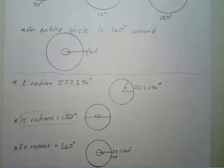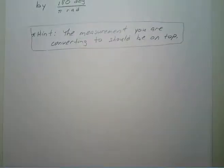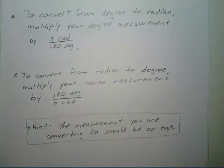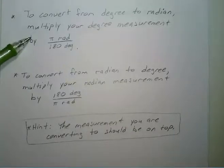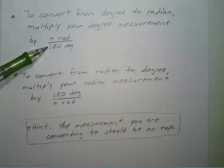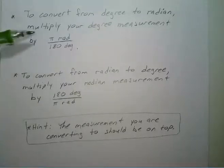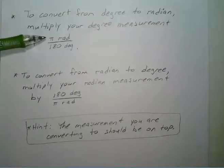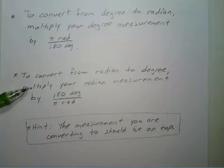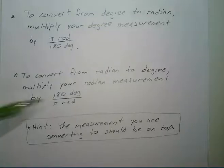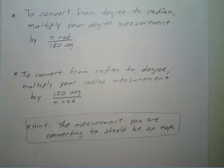Now we'll move on to how to convert from degrees to radians and radians to degrees. If you want to convert from degrees to radians, you multiply your degree measurement by pi radians over 180 degrees. If you're converting from radians to degrees, you multiply your radian measurement by 180 degrees over pi radians. The measurement you are converting to should be on top — that's a helpful hint.